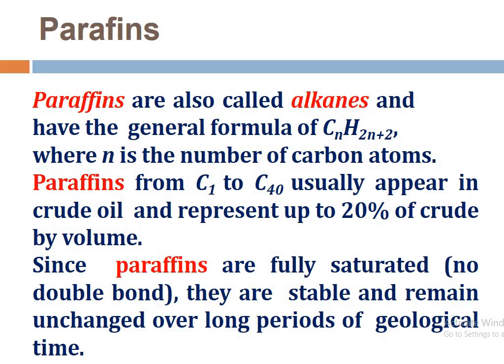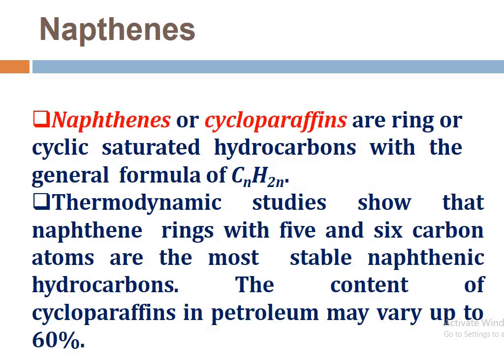The first series is paraffins, also called alkanes, with the general formula CₙH₂ₙ₊₂, where n is the number of carbon atoms. Paraffins from C1 to C40 usually appear in crude oil and represent up to 20% of the group by volume. Since paraffins are fully saturated with no double bonds, they are stable and remain unchanged over long periods of geologic time.